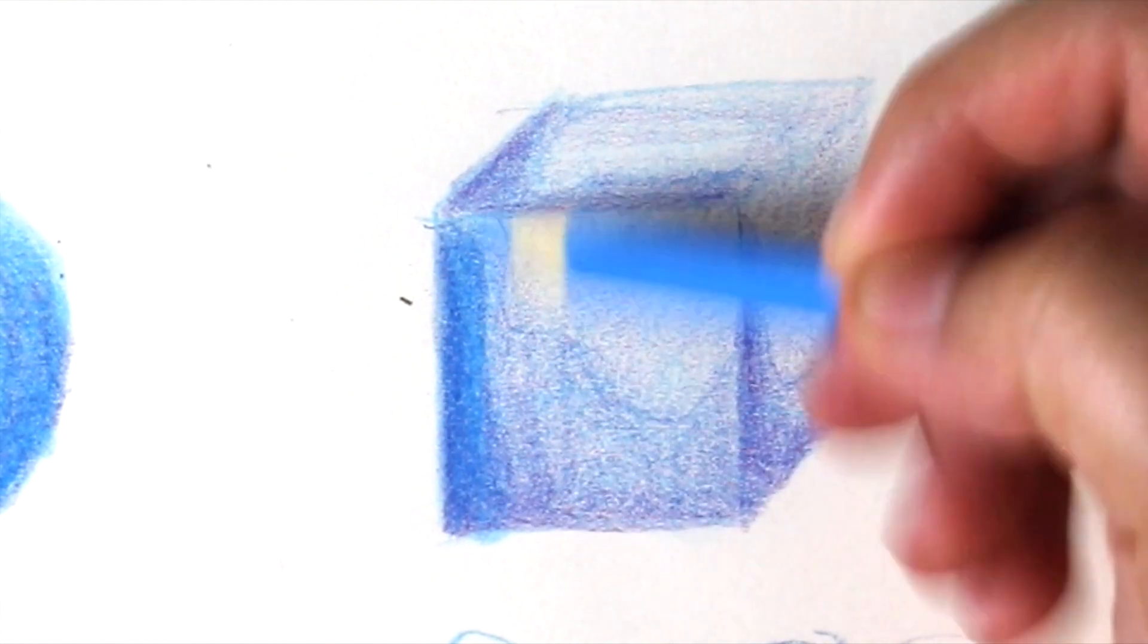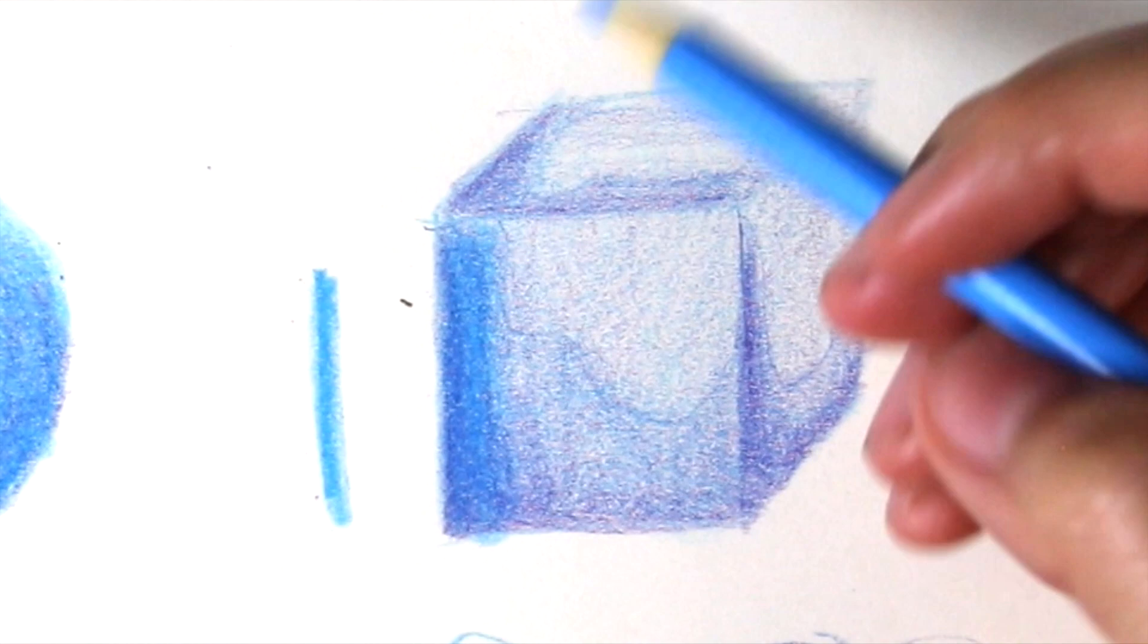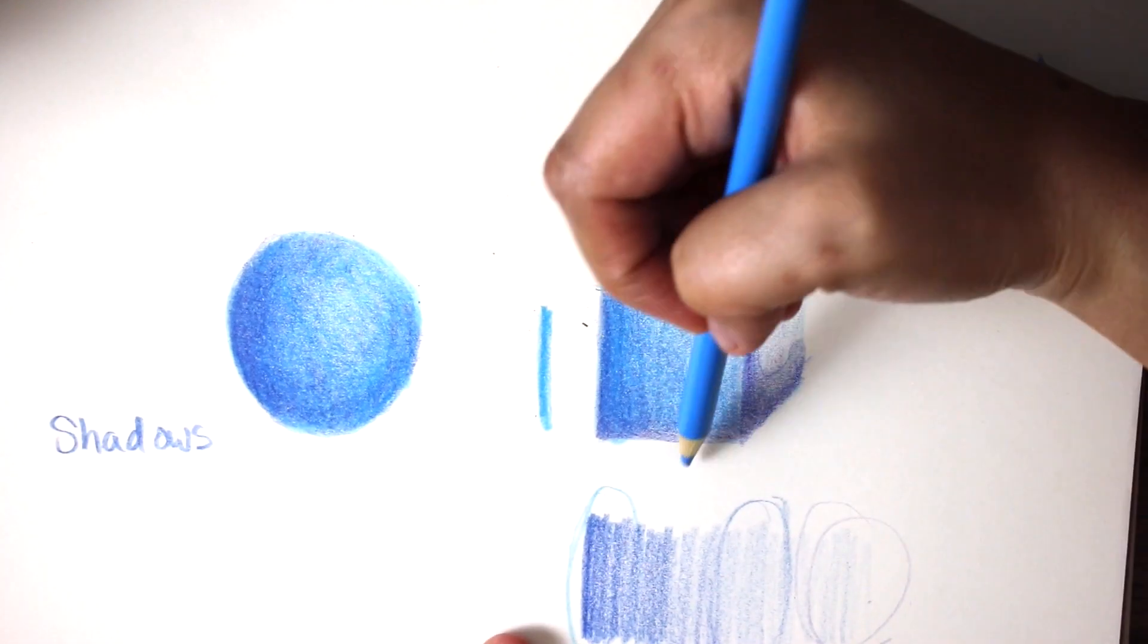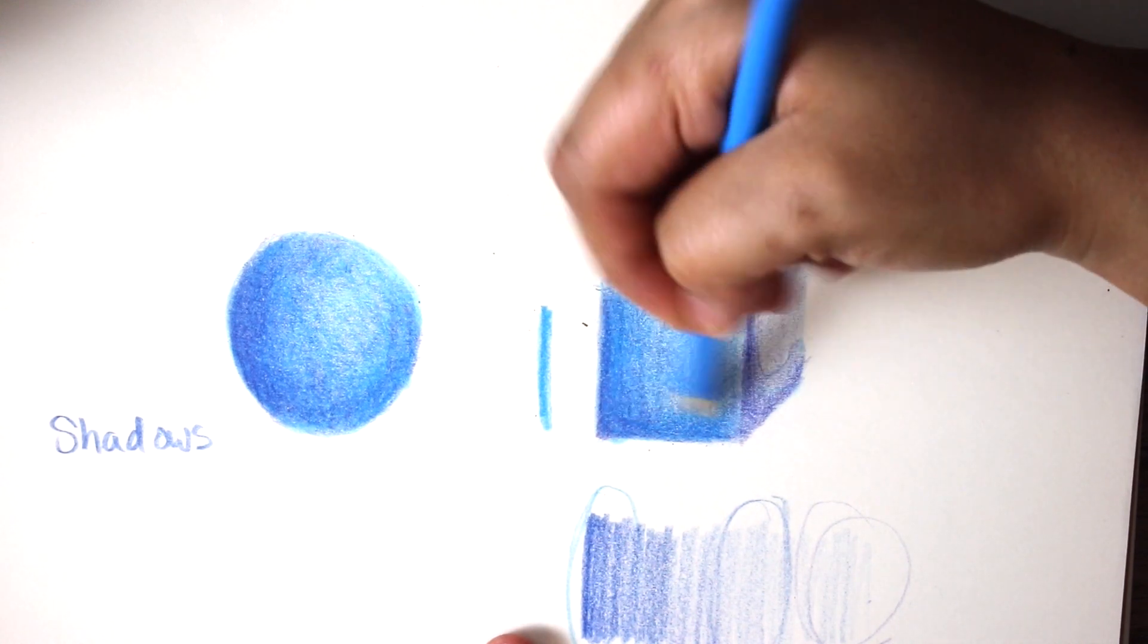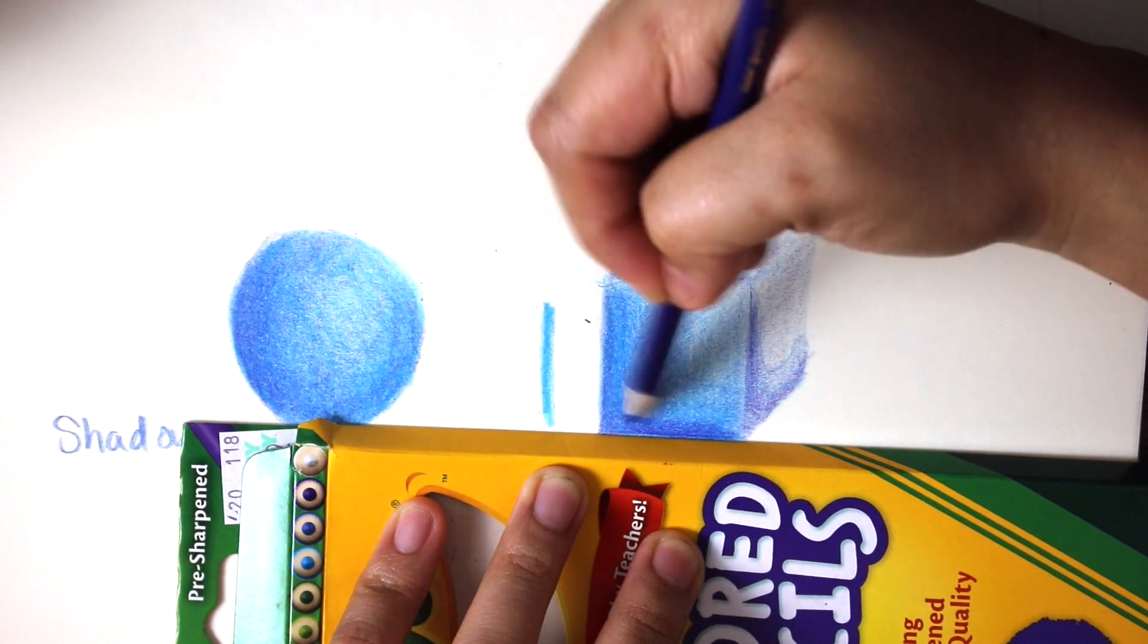To give you an idea of how much pressure I'm putting on this, it's about this much. Also, using rulers or objects to help you smooth out some edges is totally acceptable.